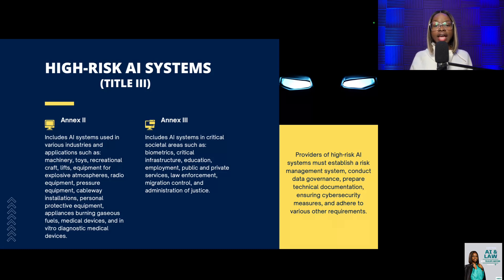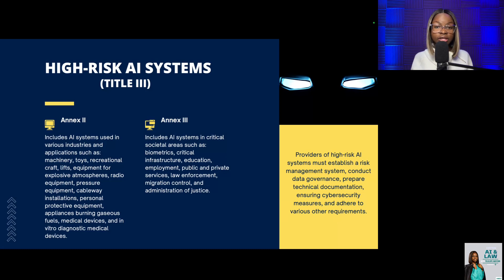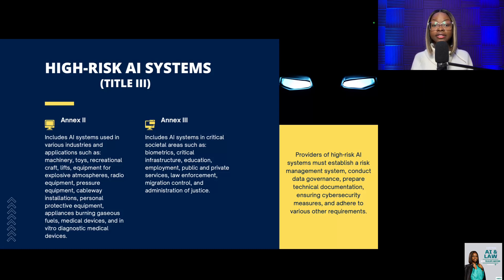Annex 3 includes AI systems in critical societal areas such as biometrics, critical infrastructure, education, employment, public and private services, law enforcement, migration control, and administration of justice.